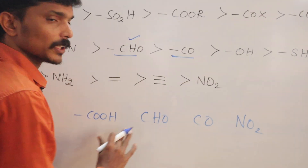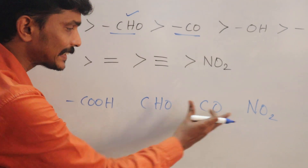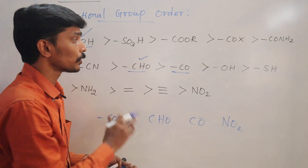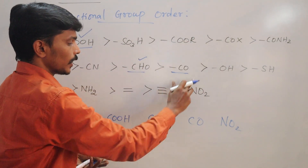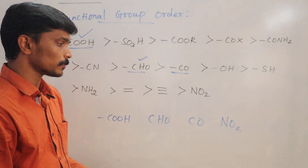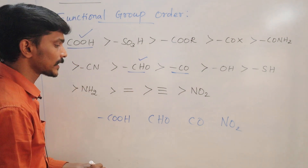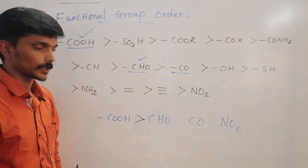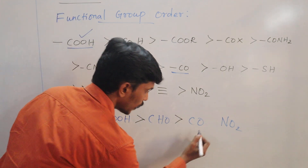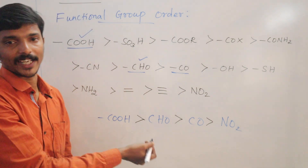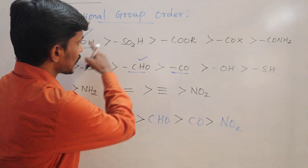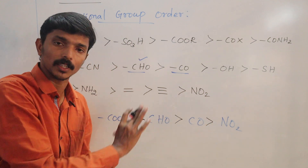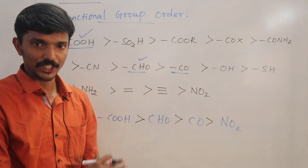If you understand this priority order concept, you can answer such questions. The priority order is first Carboxylic acid, then Aldehyde, then Keto, and after that NO2. If you understand this concept, you will be able to answer correctly.